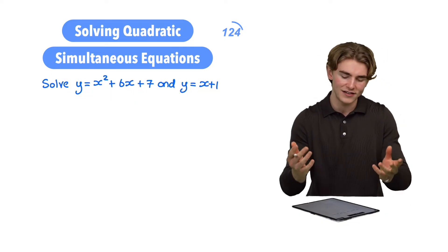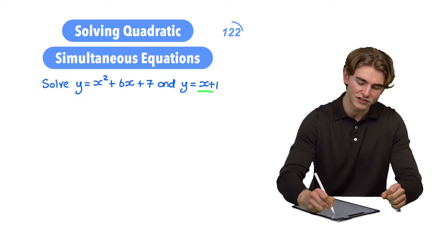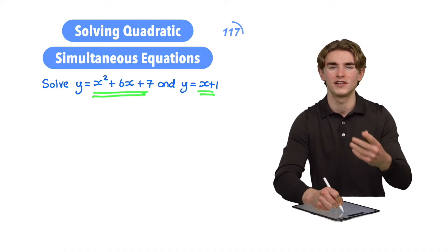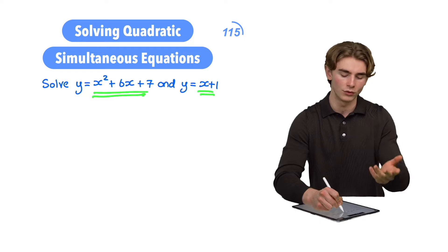If that's true, then it has to be the case that our x + 1, which is equal to y, is equal to x² + 6x + 7. Why? Because that's also equal to y.